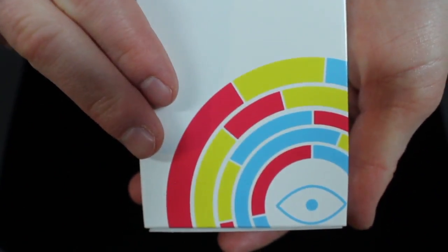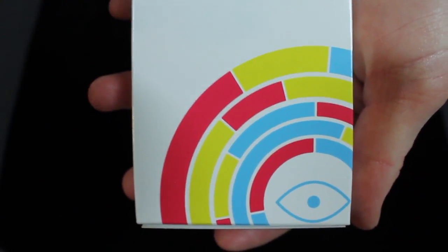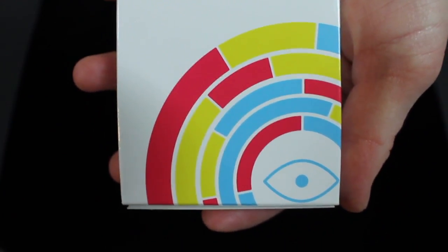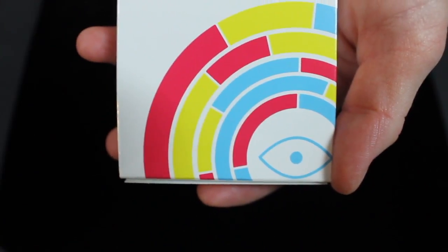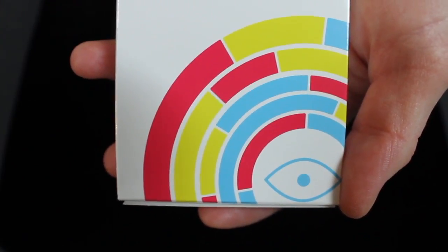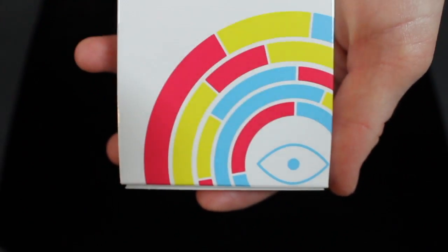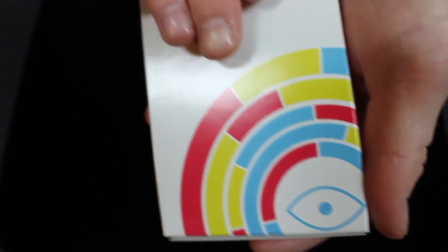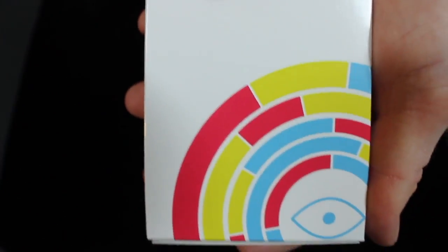The front of the tuck features a white background with that red, yellow, and blue circular pattern all around this all-seeing eye kind of in the bottom right hand corner. This takes a play on the Wonder name by the placement of this eye in this corner. The tuck itself is kind of a gloss finish as well.